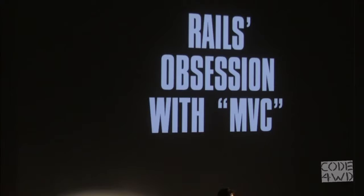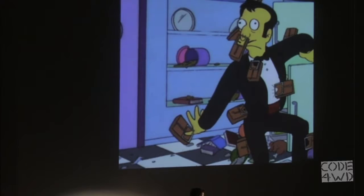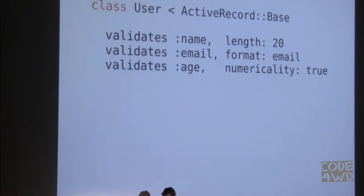If you add anything beyond MVC, you're doing it wrong, or at least not following the doctrine. To me, that is a really, really big problem. I've been working on solving this for many years because I don't see the point of sticking to MVC as if it's sacred. What we have in every Rails application is Active Record — which is a great thing, it abstracts SQL from me — but the problem is we also have validations in the model.